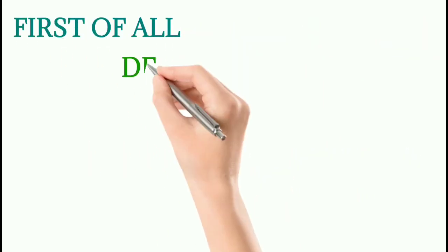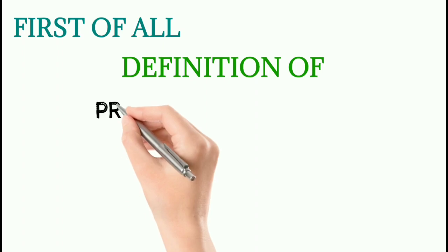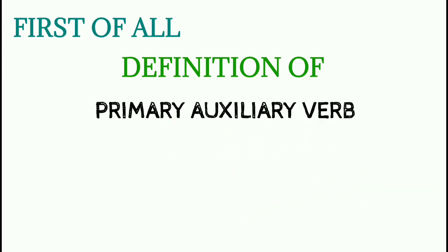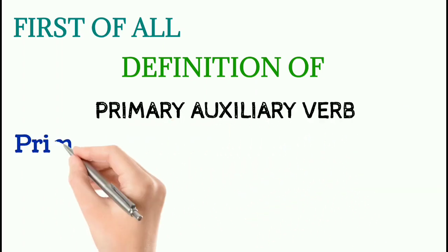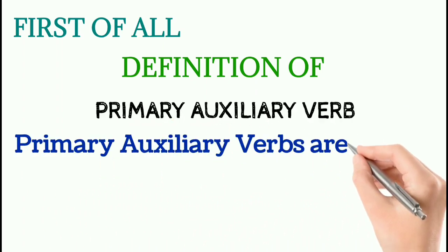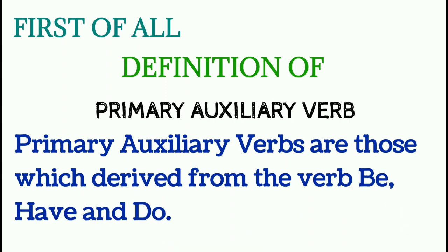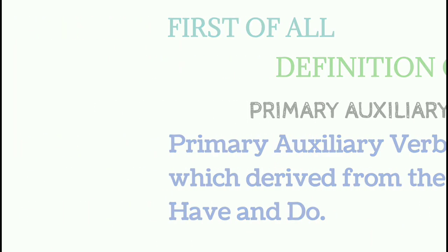First of all, the definition of primary auxiliary verbs. Primary auxiliary verbs are those which are derived from the verbs be, have, and do.